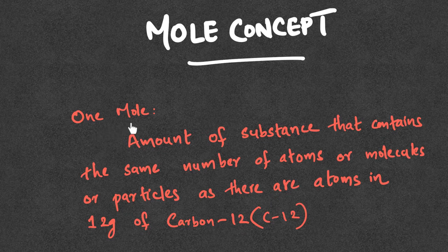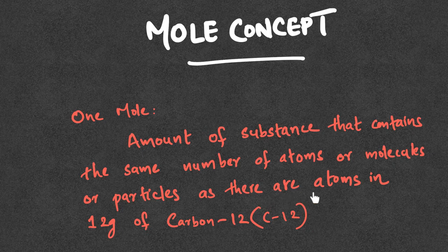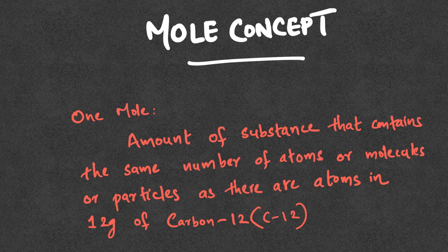We have a scientific definition of the mole concept. One mole is defined as the amount of substance that contains the same number of atoms, molecules, or particles as there are atoms in 12 grams of carbon-12. The carbon-12 isotope is 12 grams, and the total count of those atoms is what the whole concept is called.